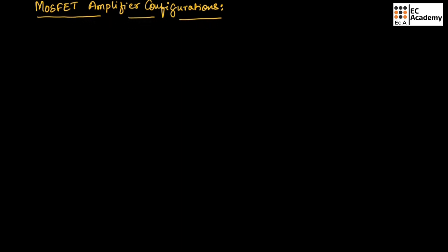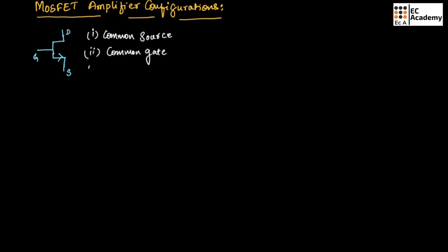Here we will understand different configurations that are used when a MOSFET can be used as an amplifier. A MOSFET has three terminals: drain, gate, and source. There are three configurations in MOSFET: the first one is common source configuration, the second one is common gate configuration, and the third one is common drain configuration.